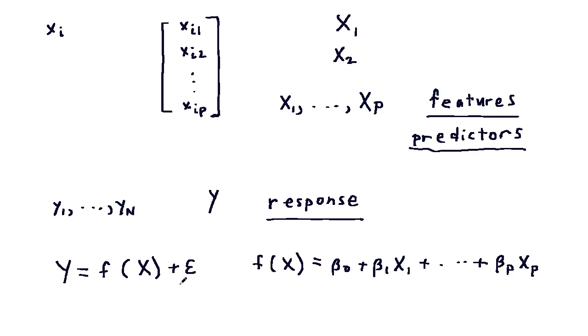Where f of x is equal to beta 0 plus beta 1 x1 plus dot dot dot beta p xp. Now here epsilon is called the error term, and beta 0 through beta p, those are called parameters.